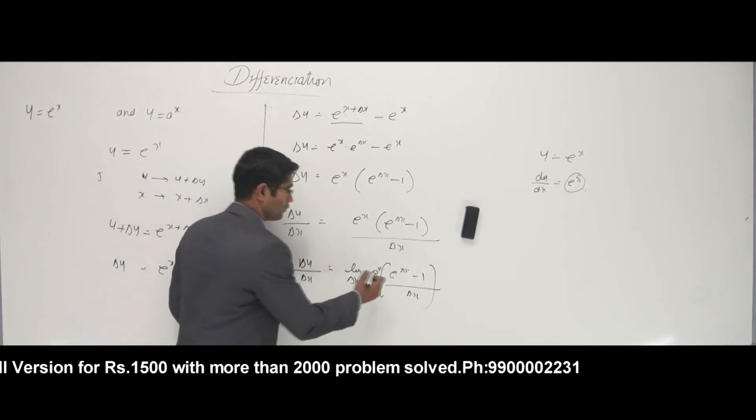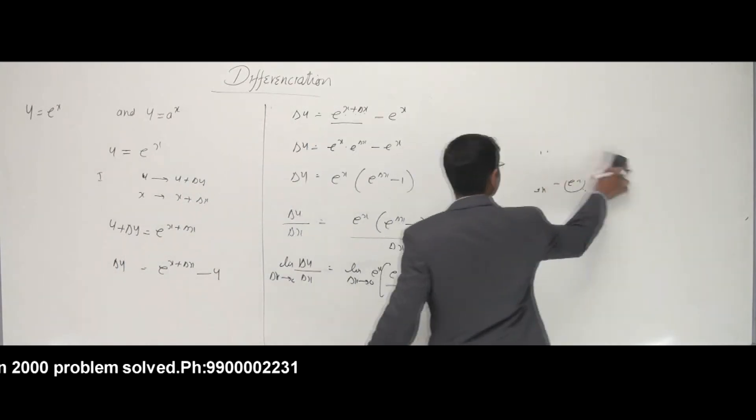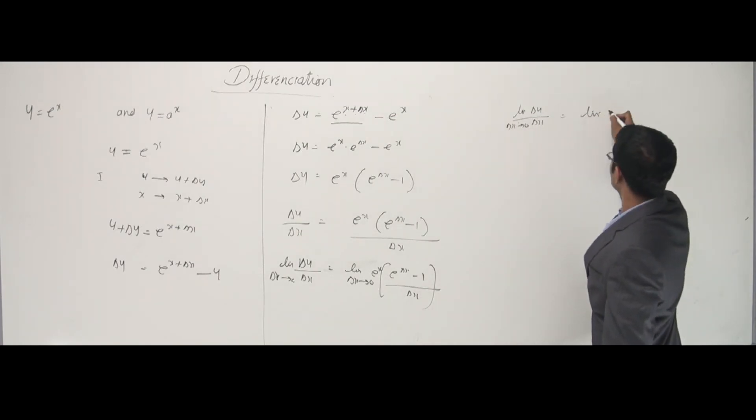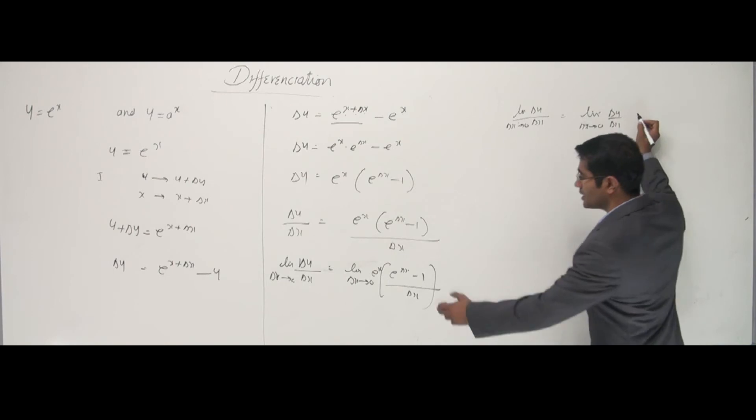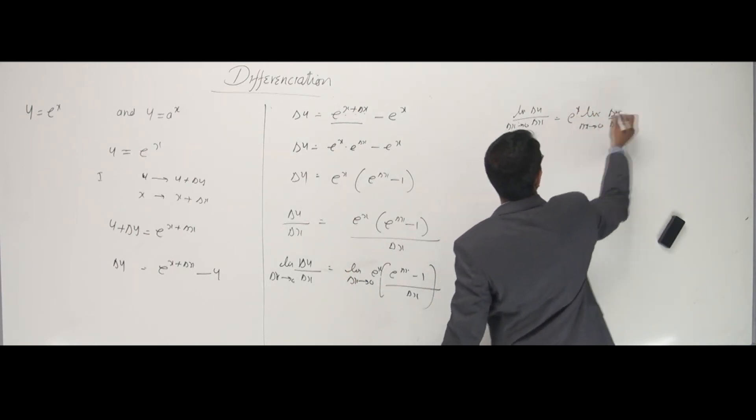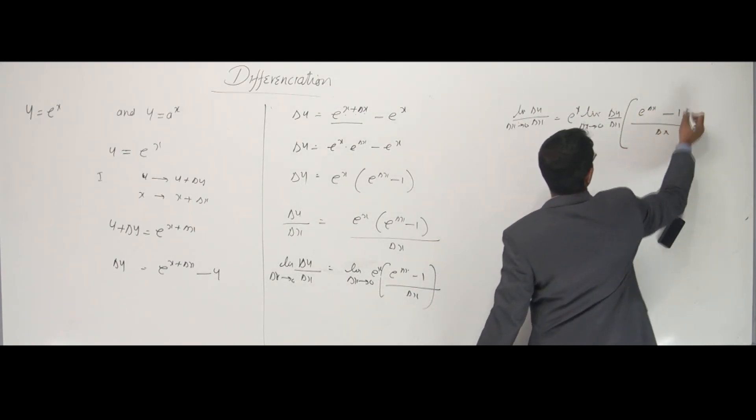Now, see. The limit would only go with things which have a delta x, not x. So I can write e power x out. I can write this as a limit of delta y by delta x where delta x tends to 0. I'm just taking e power x outside because it doesn't have any delta x. Now, what is inside here? There is e power delta x minus 1 by delta x.